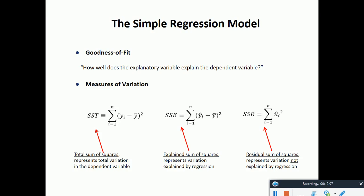Sum of square total is the actual total variation in the dependent variable yi. Sum of square explained is the predicted variation explained by the regression. The last part is sum of square residuals, or u-hat — the error term associated after you predict. For example, if the actual yi is $500 and based on my prediction I got $499, my error term is 1 unit.